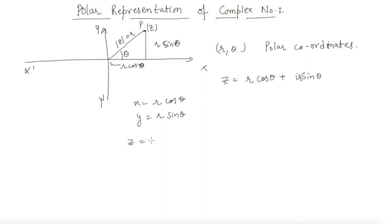As z is equal to x plus iota times y, it is coming out to be r cos theta plus r iota times sin theta.